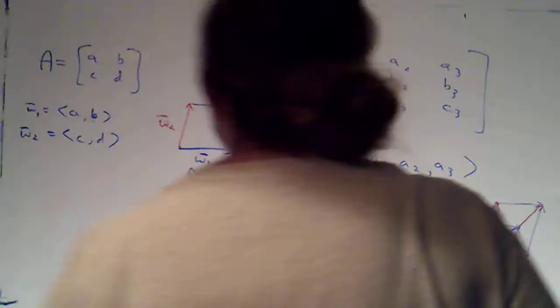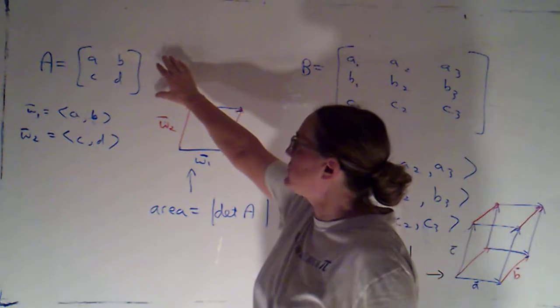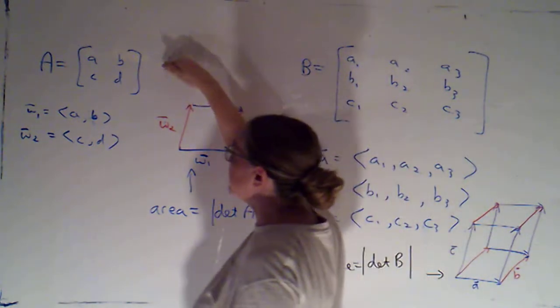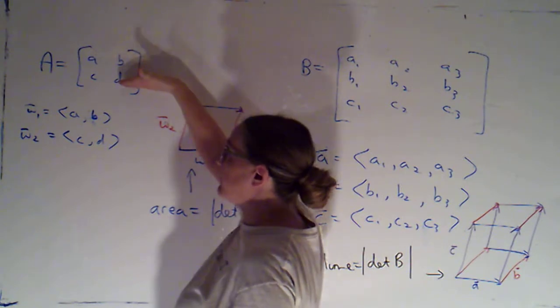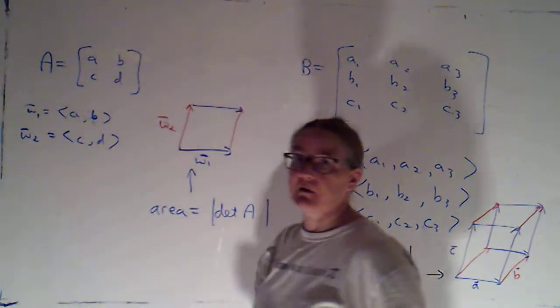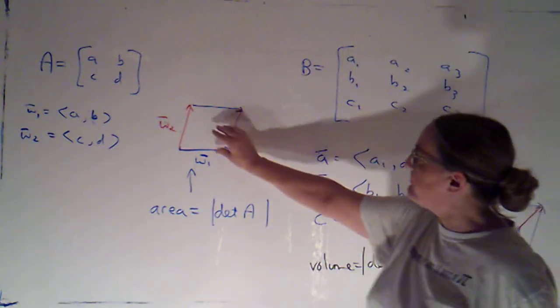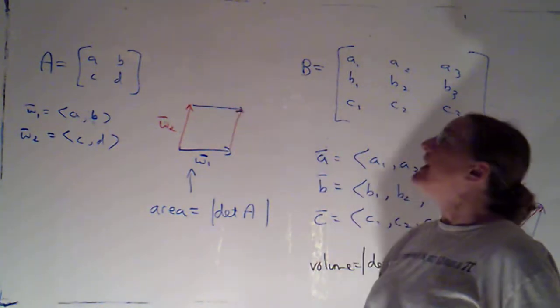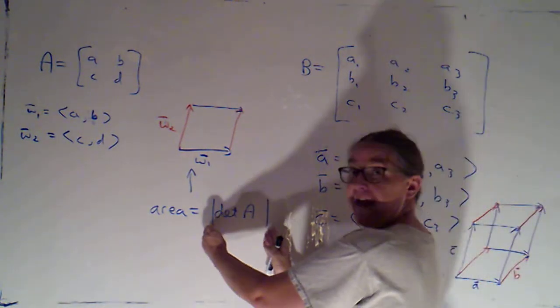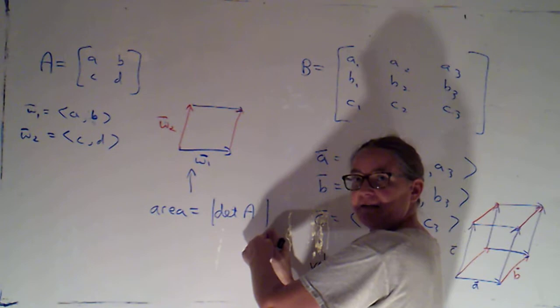In the last video, we discussed the fact that if I have a 2 by 2 determinant, I can view that as being made out of two vectors, either the two vectors that make up its rows, as I've written right here, or the two vectors that make up its columns. Either way, if I use those vectors to form a parallelogram, the area of that parallelogram will be the absolute value of the determinant of that matrix.